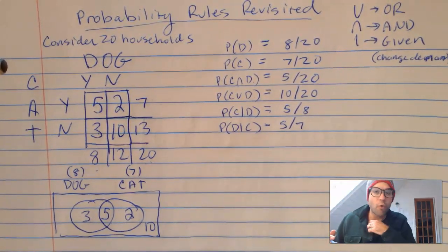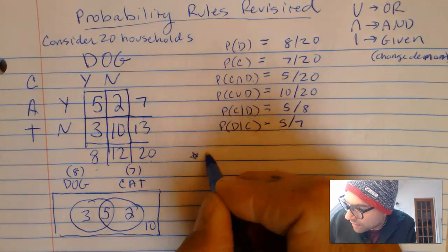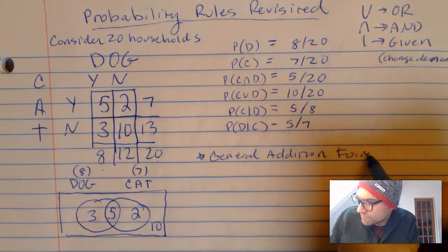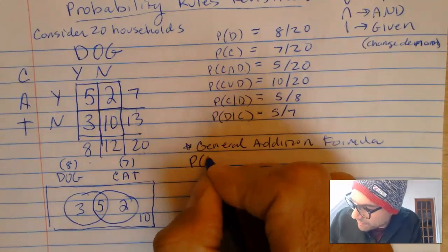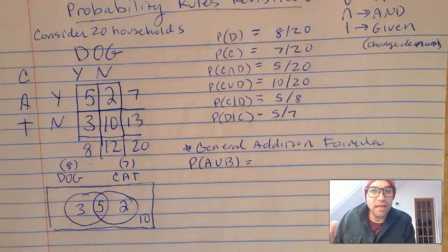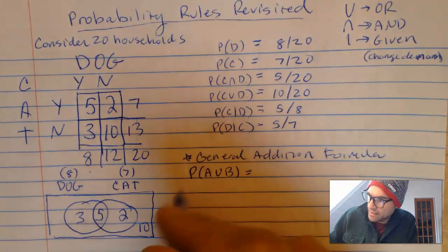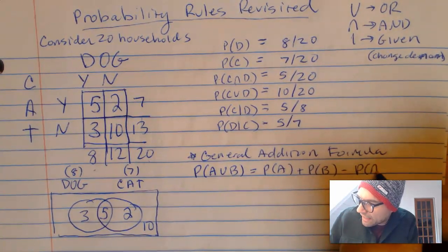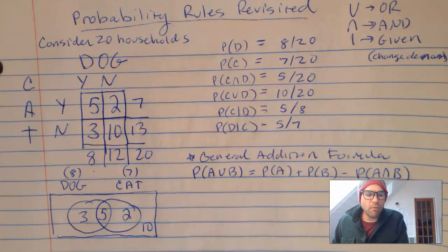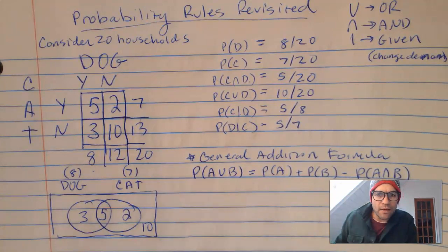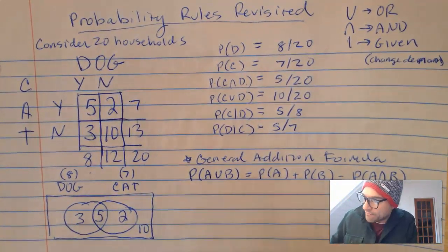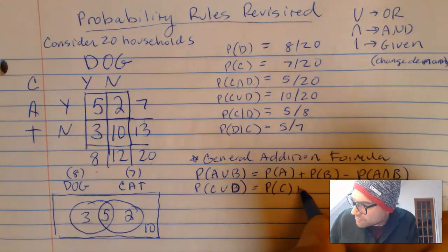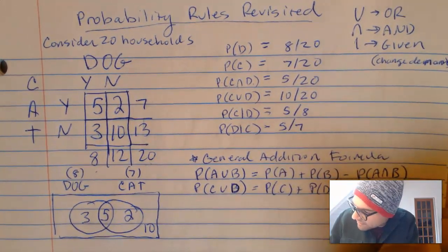The first formula is the general addition formula. It's given to you on the AP test. The probability of A or B — where 'or' means A or B or both — equals the probability of A plus the probability of B minus the probability of A and B. In terms of cats and dogs: probability of cats plus probability of dogs minus probability of cat and dog.